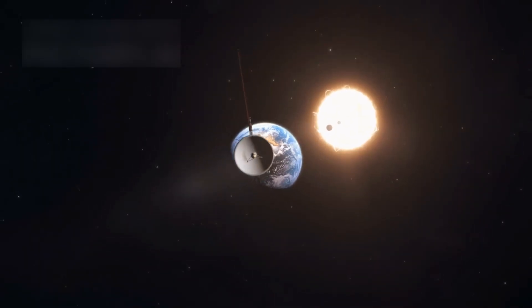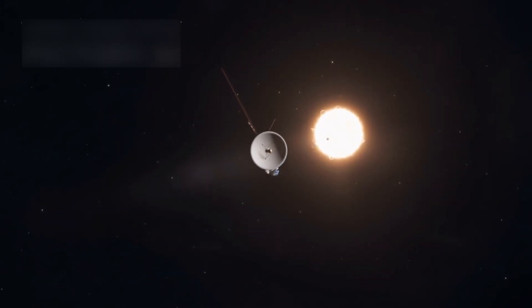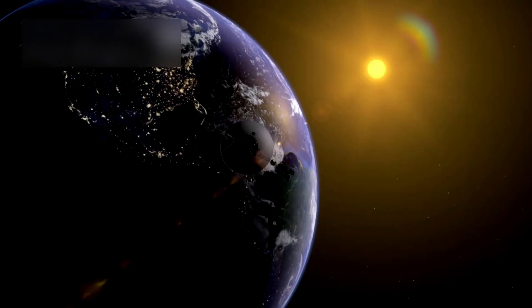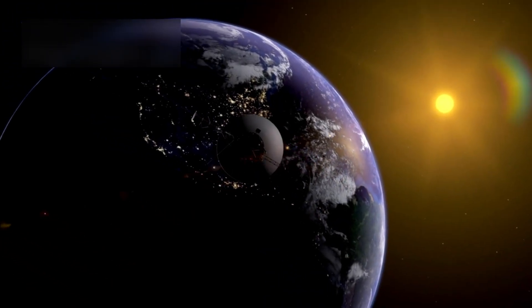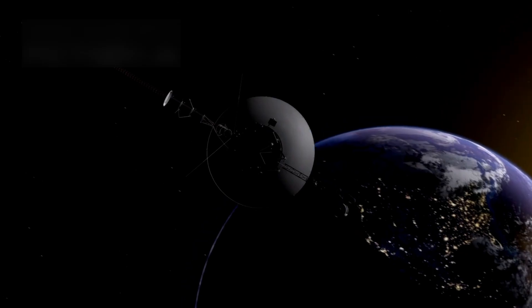In 2012, it crossed a major boundary called the heliopause, where the influence of our sun fades and interstellar space begins. This was a historic moment, making Voyager 1 the first human-made object to leave the solar system.